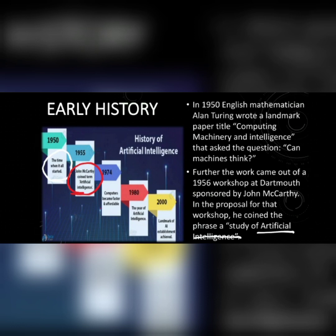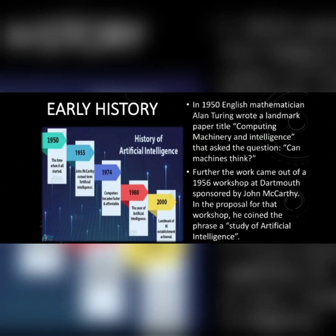In 1974, computers became faster and affordable to everyone. In 1980, it was a significant year for artificial intelligence. And in 2000, a landmark of artificial intelligence establishment was achieved — the establishment of AI was achieved in the year 2000.